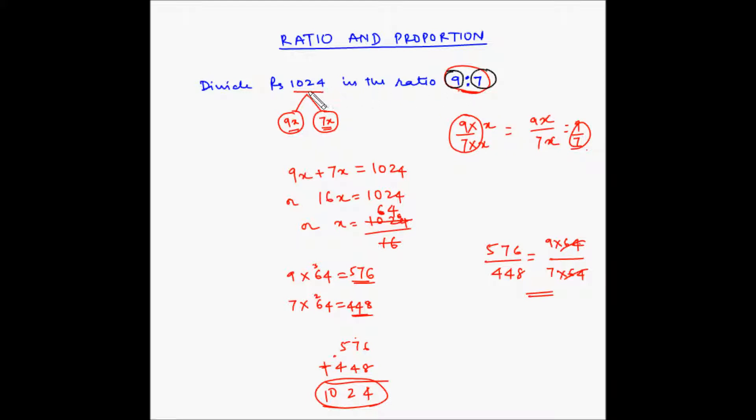First we have to split rupees 1024 into 16 equal parts. What we do is we divide 1024 by 16. 1 by 16 multiplied by 1024. This will come out to be 64.